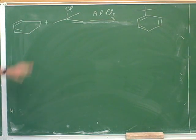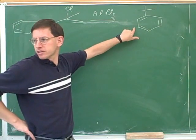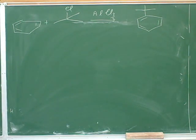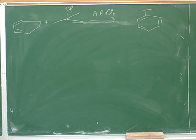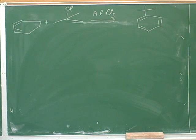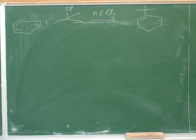The question is asking for a mechanism that would take us from these starting materials to this product. They want a mechanism that would take us from these starting materials to this product. A student suggests it wouldn't work because it's a tertiary carbocation. Let's start with the mechanism and see how it goes — let's see if we can draw a reasonable first step.